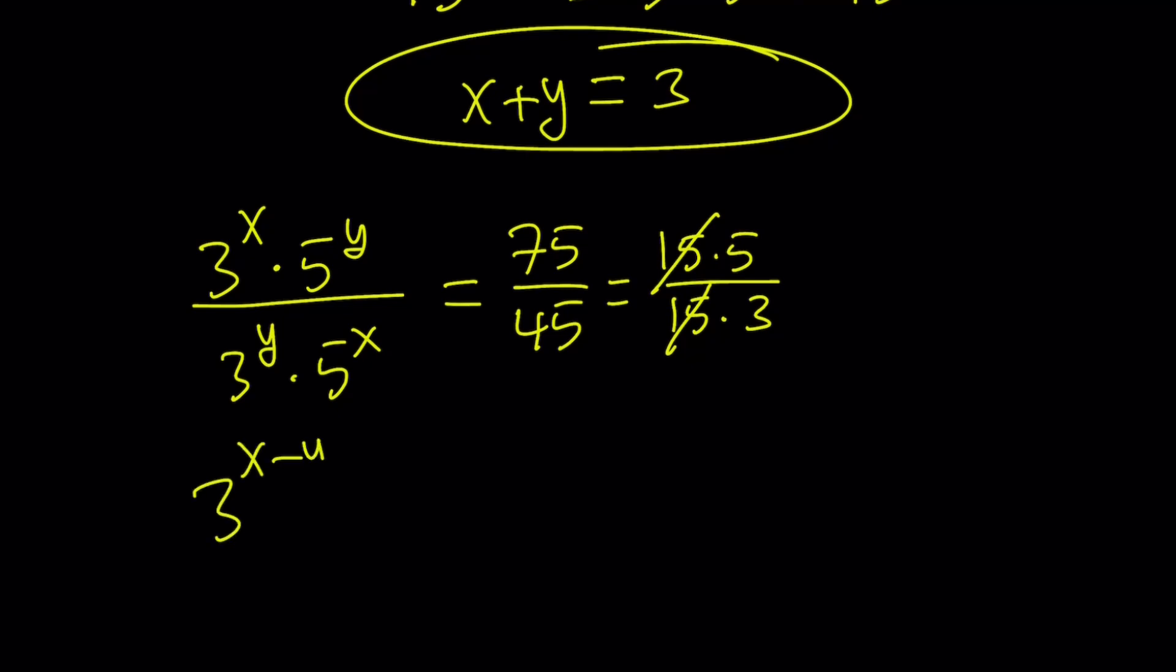That's going to give you 3 to the power of x minus y. And then the 5s give you 5 to the power of y minus x. If you set it equal to 5 over 3, then you run into a problem. The problem is neither the bases nor the exponents are the same on the left-hand side. But I do have a 3 and a 5 on both sides, so that's promising.